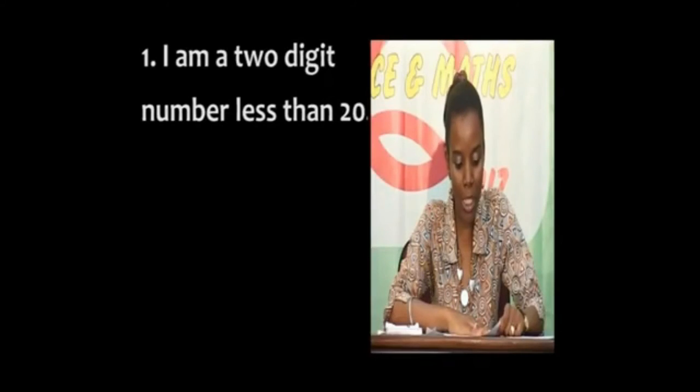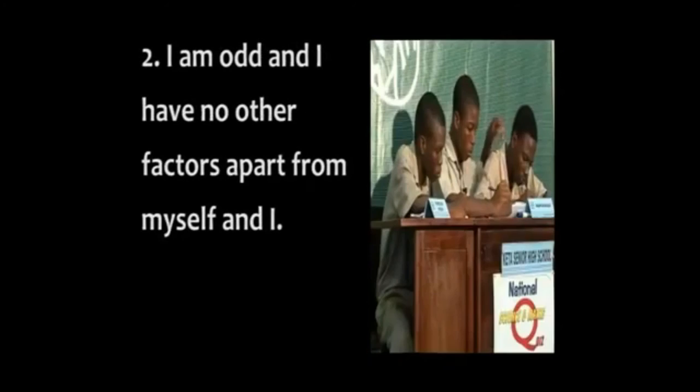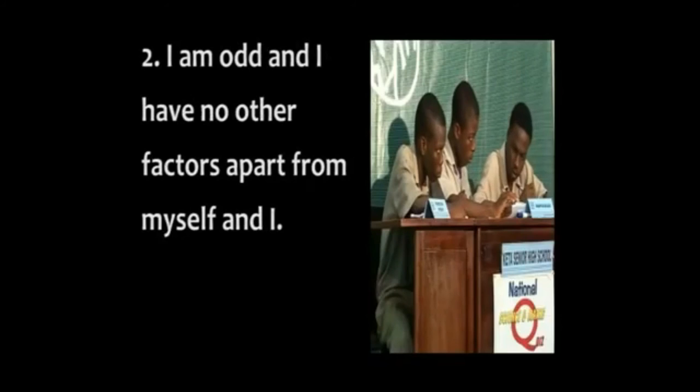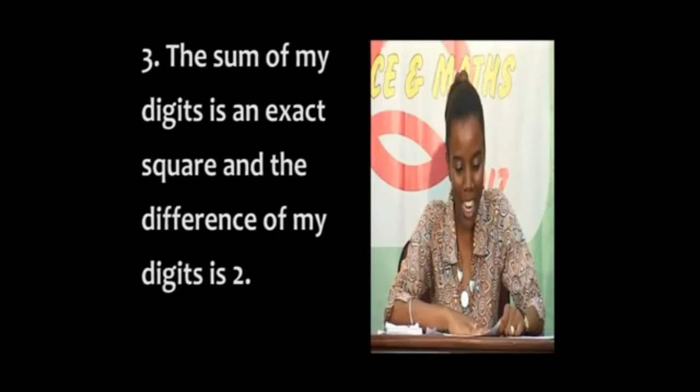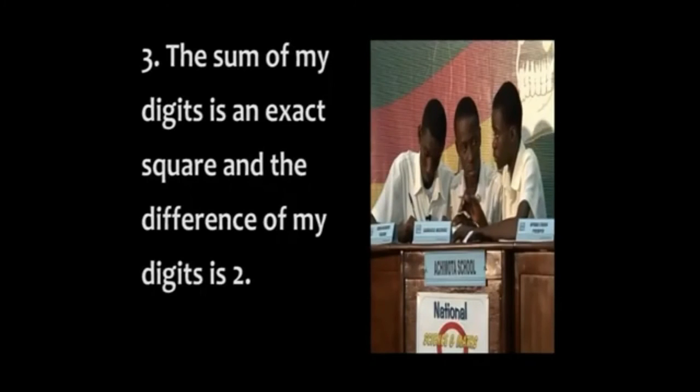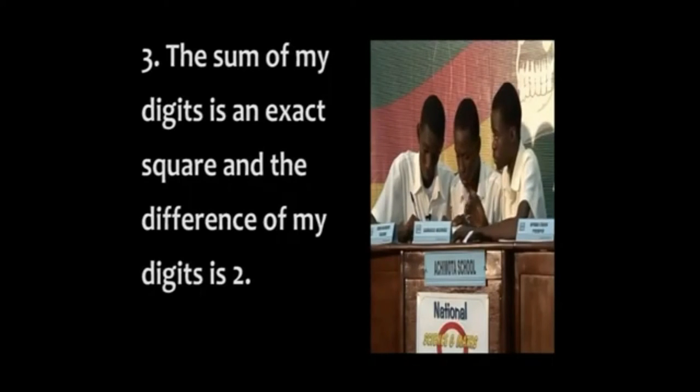Next riddle: I am a two-digit number less than 20. I am odd and have no other factors apart from myself and 1. The sum of my digits is an exact square and the difference of my digits is 2. The answer: 13. They solved the riddle on the third clue — three points.